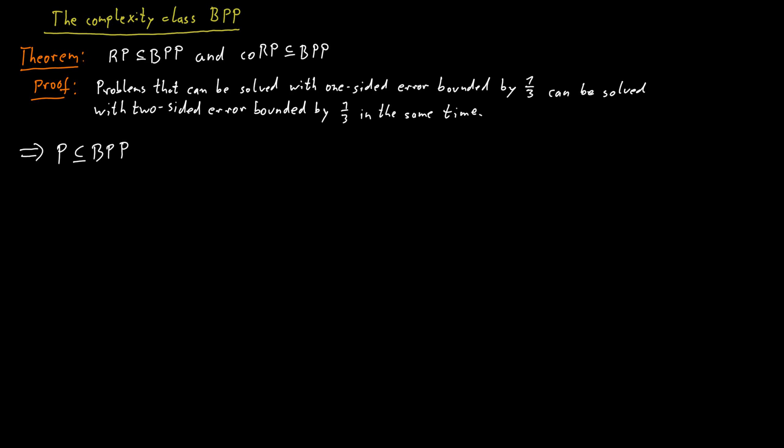Also observe that BPP is a symmetric complexity class. Meaning words that are in the language and words that are not in the language are sort of treated the same way, because in both cases we allow this error of one-third. And therefore BPP and the complement of the class BPP, coBPP, are actually the same. So this is a difference to RP where RP and coRP are not obviously the same.